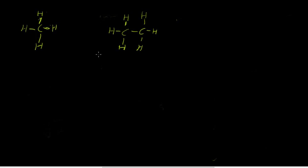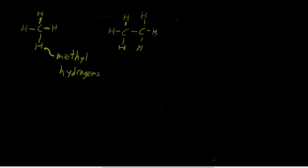We've seen the reactions for radical chlorination of both methane and ethane. Both of these reactions involve hydrogen extraction by a chlorine radical. In both reactions, really only one major product was observed, because all of the hydrogen atoms are basically the same — they're all methyl hydrogens. And if that's not clear, you can watch the video I made on methyl, primary, and tertiary hydrogen atoms. All the hydrogens in ethane are primary hydrogens because the carbon they're attached to is only attached to one other carbon atom.